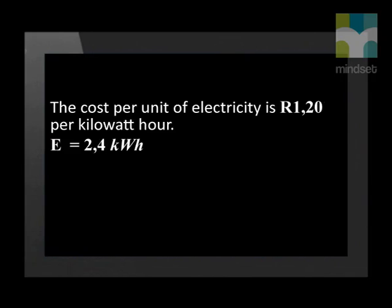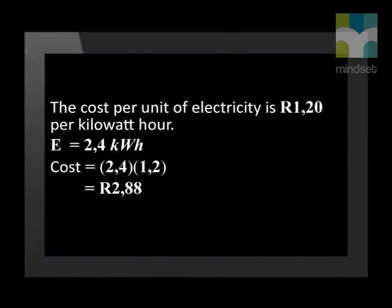Now that we know how much energy the heater used in 2 hours, we can calculate the cost of using it. We have been told that electricity costs R1.20 per unit, meaning R1.20 per kilowatt hour. Therefore, we calculate the total cost by multiplying the units by the cost per unit: 2.4 kWh × R1.20 = R2.88.